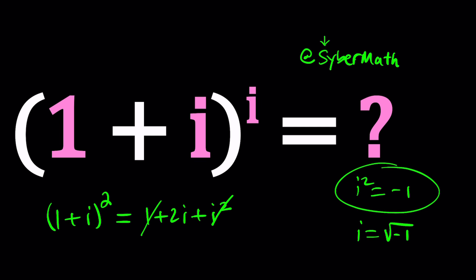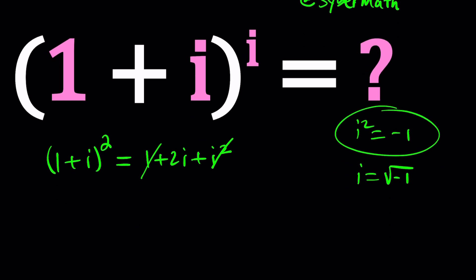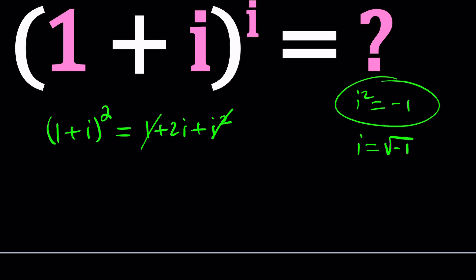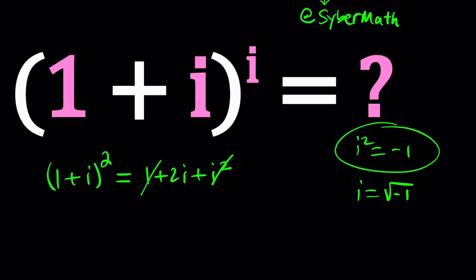So 1 plus i is a special number because its second power is imaginary. In other words, it doesn't have a real part, which is cool. And then you can take 1 plus i to other powers using this. You can even raise it to the power 2025 if you want. But that's not the point. We want to raise it to the power i.